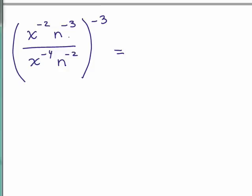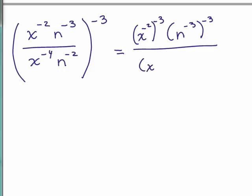Okay, so if we just take each of the different factors in here, we've got x to the negative 2 raised to the negative 3. So we have n to the negative 3 raised to the negative 3. And that's the numerator. The denominator, we have x to the negative 4 raised to the negative 3 and also n to the negative 2 raised to the negative 3.